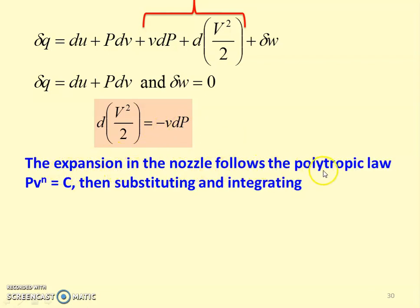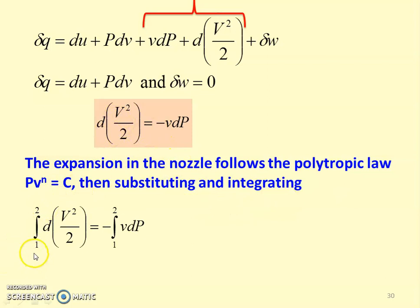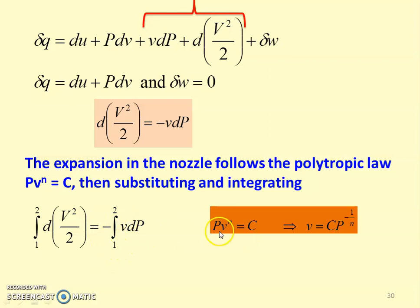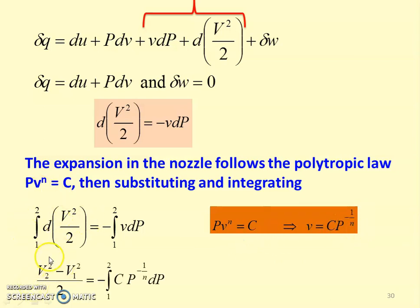The expansion in the nozzle follows the polytropic law. In the earlier lecture we assumed isentropic flow; now we take the polytropic law: PV to the power n equals constant. Substituting PV^n equals constant into this equation and integrating from inlet to exit — integrating d(V squared by 2) equals minus integral VdP — we substitute specific volume V equals C times P to the power minus 1/n, giving: V2 squared minus V1 squared divided by 2 equals minus the integral from 1 to 2 of C times P to the power minus 1/n dP.